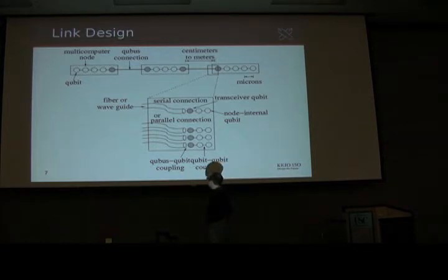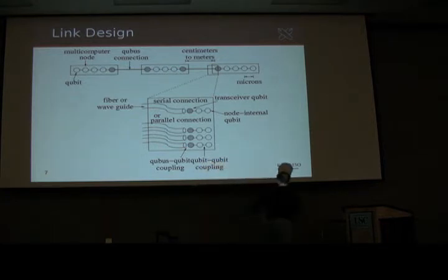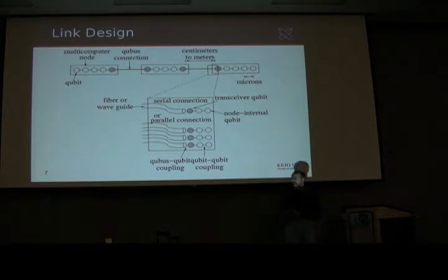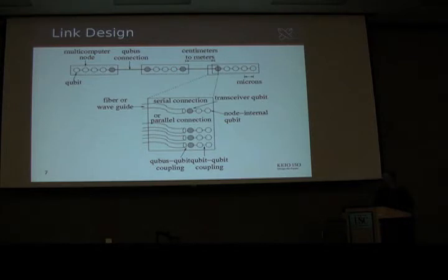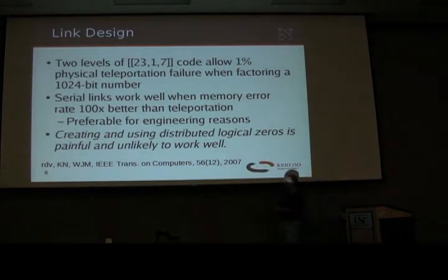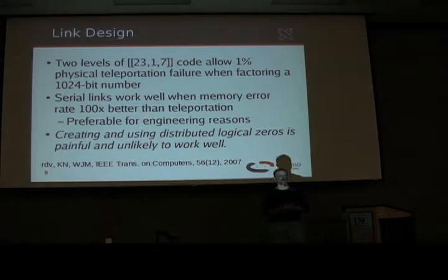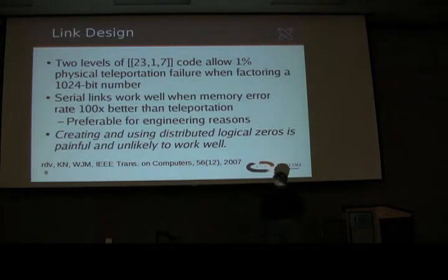On link design: you've got a string of nodes connected into a line via some sort of Q-bus architecture. Your basic choices are connecting these in either a serial or a parallel fashion. Serial connections actually have a lot of advantages — in terms of physical packaging it means you only have to run one connector instead of N connectors. And it turns out that works well enough for a lot of purposes, provided you meet a particular constraint: the memory error rate must be on the order of one to two orders of magnitude lower than the error rate of your teleportation operation.